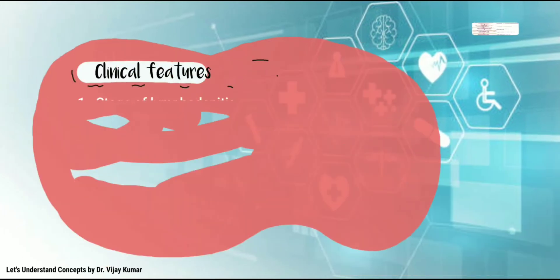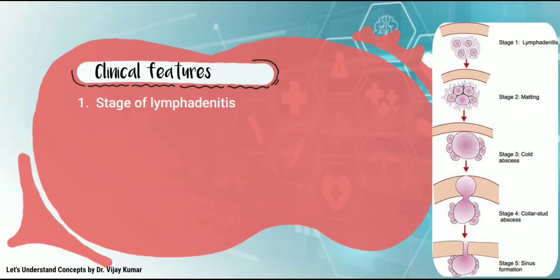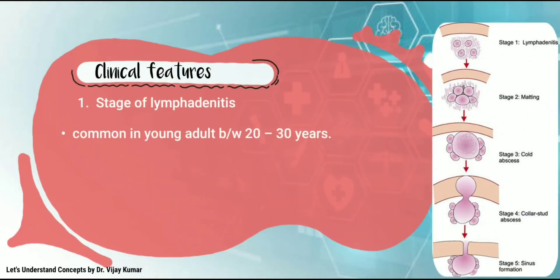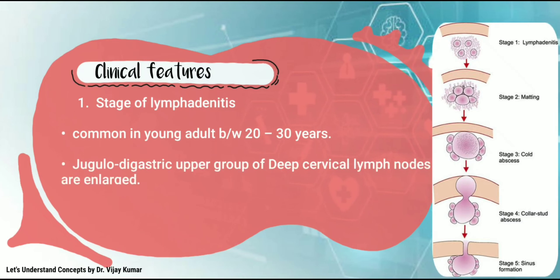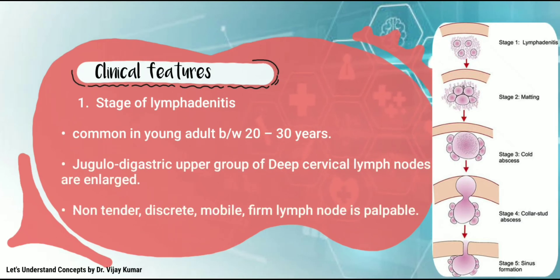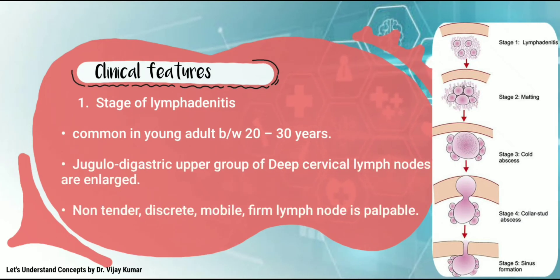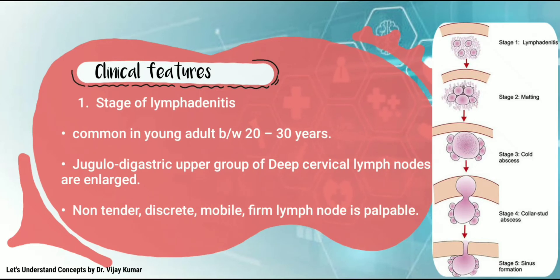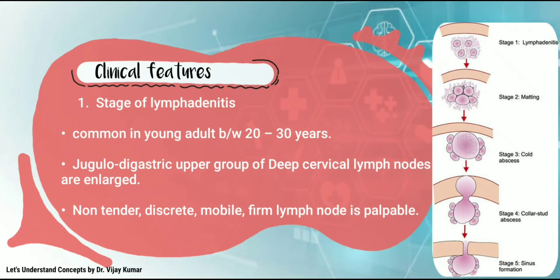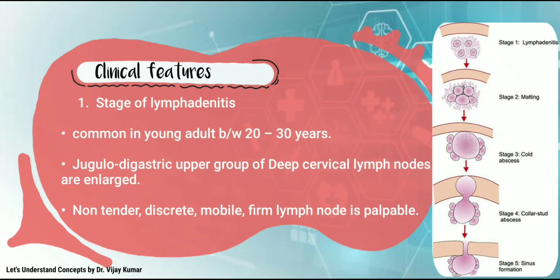Clinical features. First stage: lymphadenitis. This is common in young adults between 20 to 30 years. The jugulodigastric upper group of deep cervical lymph nodes are enlarged. A non-tender, discreet, mobile, firm lymph node is palpable.